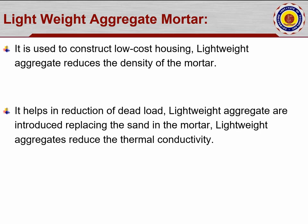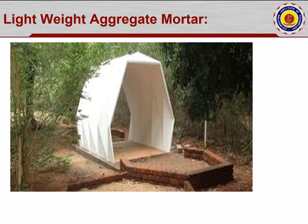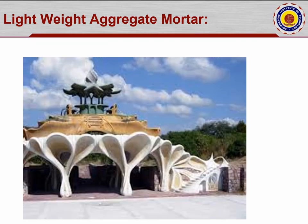Lightweight aggregate mortar is used to construct low-cost housing. Lightweight aggregates reduce the density of the mortar, helping in reduction of dead load, and they also reduce normal thermal conductivity — which in turn reduces crack development. Lightweight aggregates are introduced by replacing sand in the mortar. An example is the construction of a small dome shell, which can act as a single room in a picnic spot and can be reshaped at later stages.